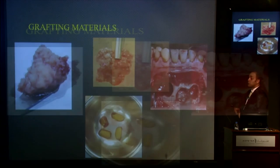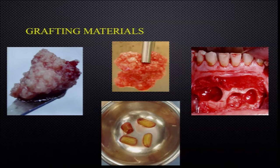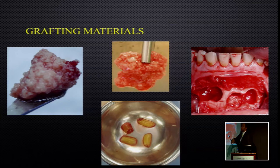The maxillary sinus is very forgiving — anything placed inside it will give us bone. Autogenous bone was the gold standard for years. Bio-Oss later showed the same results. In fact, leaving only the blood clot inside the maxillary sinus gives the same results — that's what is called graftless sinus lifting — which can be done with simultaneous implant placement or as a separate stage.